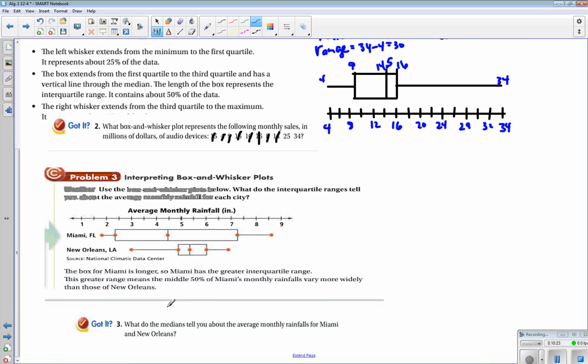Now let's go ahead and interpret these. Use the box and whisker plots below. What do the interquartile ranges tell you about the average monthly rainfall for each city? We look at Miami and New Orleans. Miami has anywhere from 2.4 to 7.3 inches of rain in its middle 50%, but if you look at New Orleans, most of their rainfall happens between like 4.7 and 6 inches. So the box for Miami is longer, so Miami has a greater interquartile range. This means that the middle 50% of Miami's monthly rainfalls vary more widely than those of New Orleans.